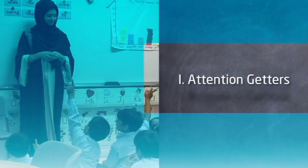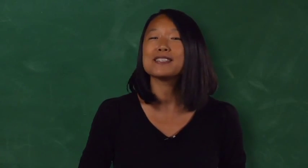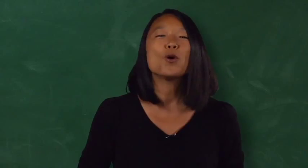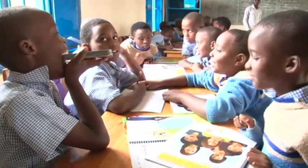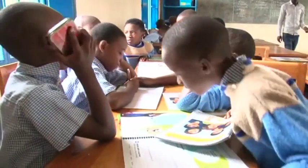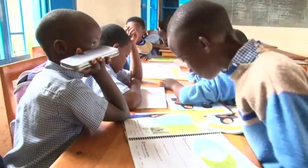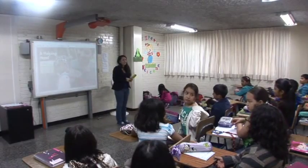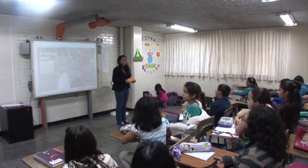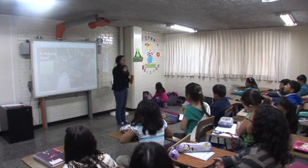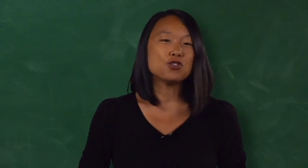A first step in classroom management is getting your students' attention. It's a good idea to have several attention-getting strategies ready for when your young learners become excited, talkative, or distracted. Maybe the classroom is loud because students are doing group work and many of them are talking at once, or maybe you are just starting class and students are still settling into their seats and chatting with friends. You can prepare different strategies for getting students' attention during the lesson that are quick and easy to use.